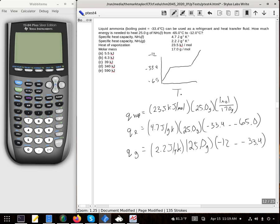We are going to calculate these three Qs and add them together. My first Q, I'll just do top down, so 23.5 times 25 divided by 17 gives us 34.6 kilojoules.